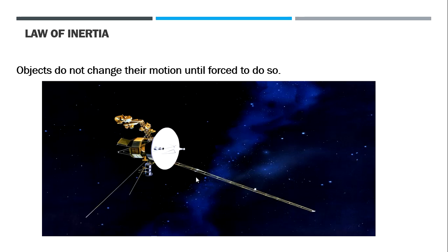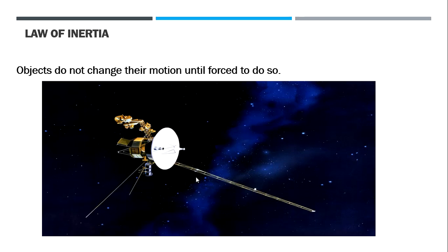In space there are no forces, so satellites and planets move in a straight line due to inertia — nothing forces them to stop or change direction. Here on Earth, however, we have friction, drag force, and other unbalanced forces to bring objects to rest. You hit a football and it doesn't keep flying — air resistance, drag force, or your hand will stop it. Thank you for watching, and we'll continue in the next part of this lesson.